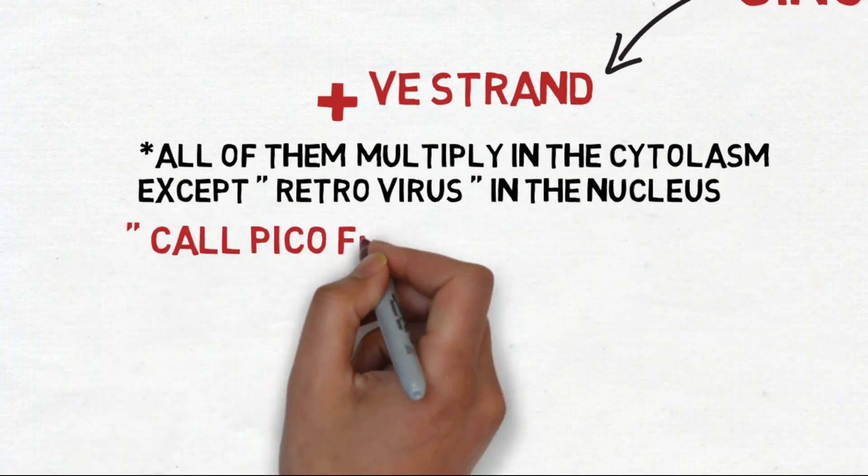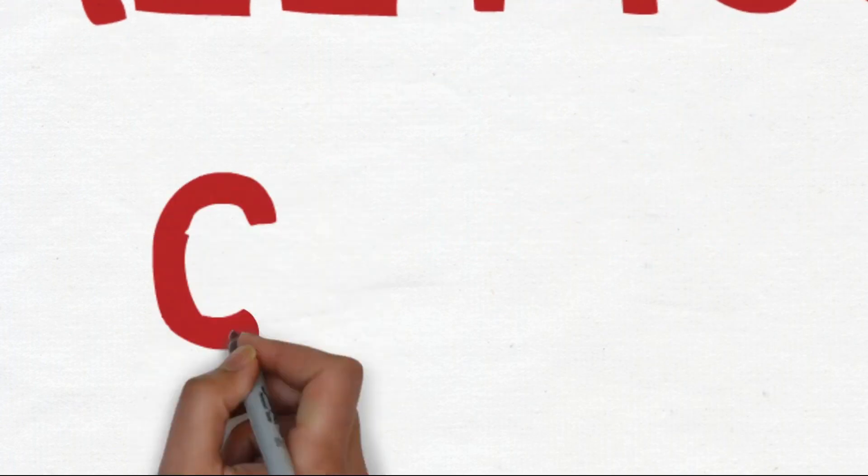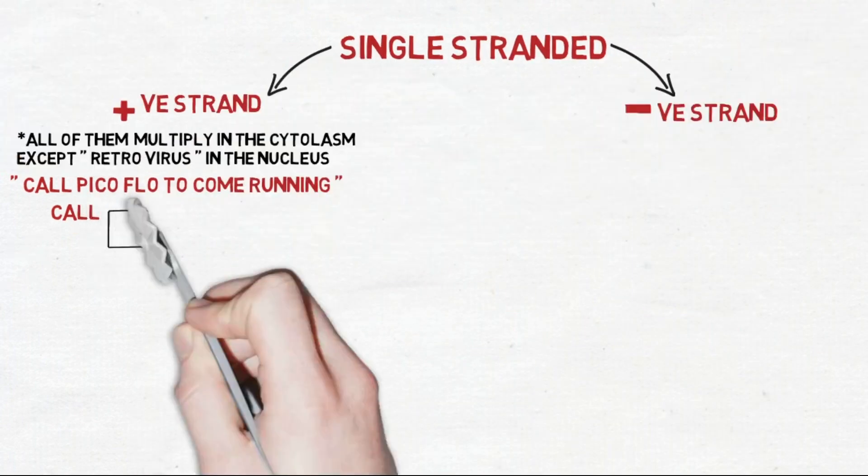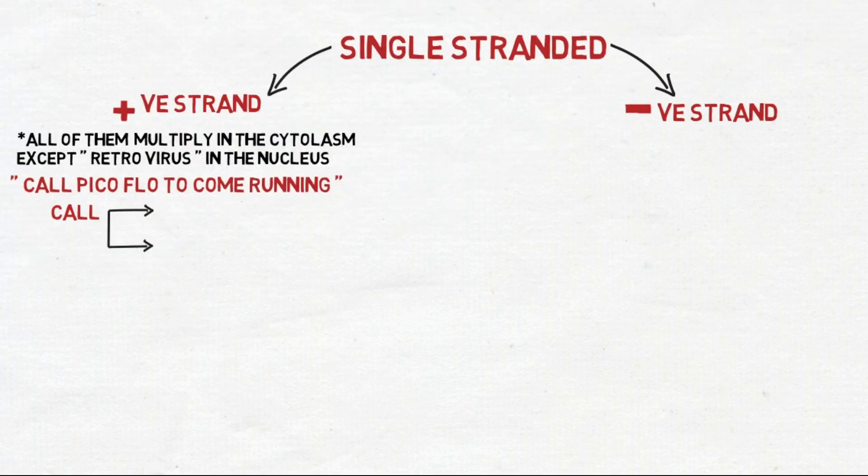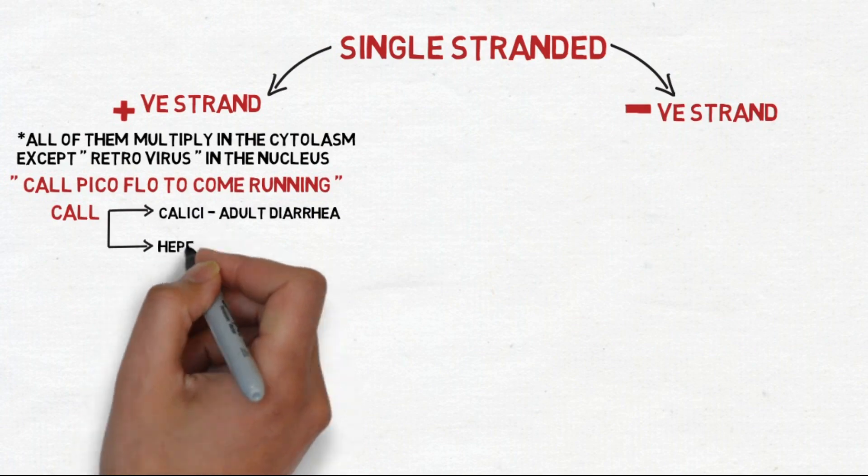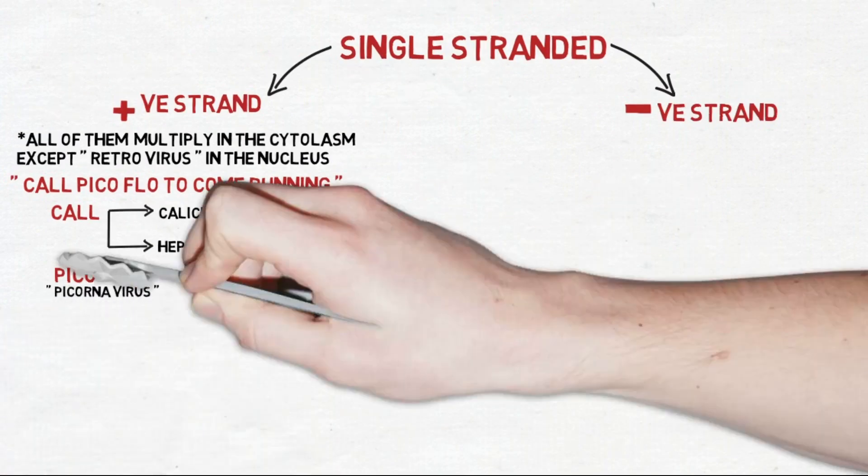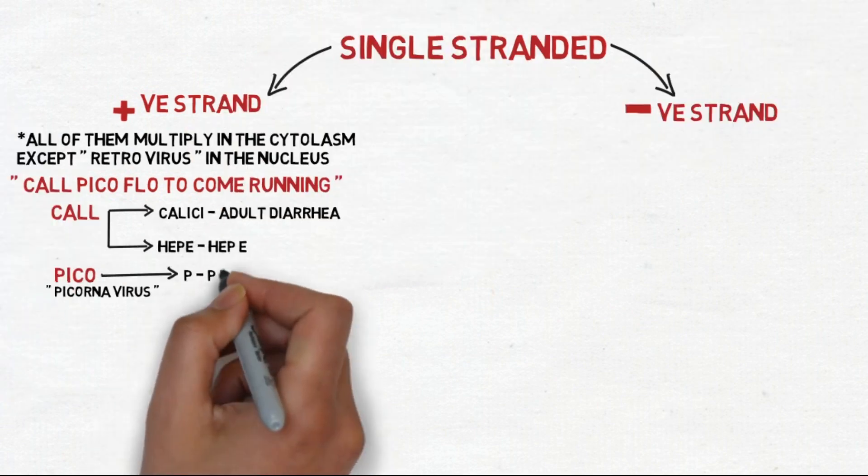The mnemonic suggested for these viruses is called PICO flow to come running. CALL stands for two types of viruses: Calicivirus that causes adult diarrhea and Hepevirus which causes hepatitis E. PICO stands for Picornavirus; luckily the pronunciation copies the mnemonic.